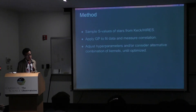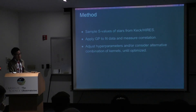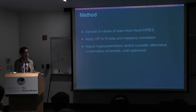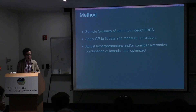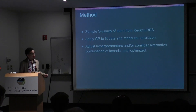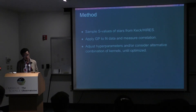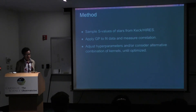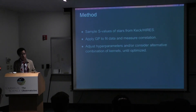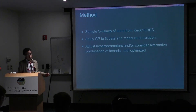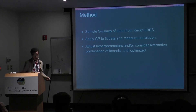Our methods: we picked three stars from the Keck Hi-Res survey. They differed in terms of the amount of data points with respect to time. The Keck Hi-Res survey basically used the RV method to detect exoplanets. We used the George package via Python to measure correlations of the GP fits. We changed our hyperparameters and kernels accordingly until these were optimized relative to the maximum values of our likelihood output.